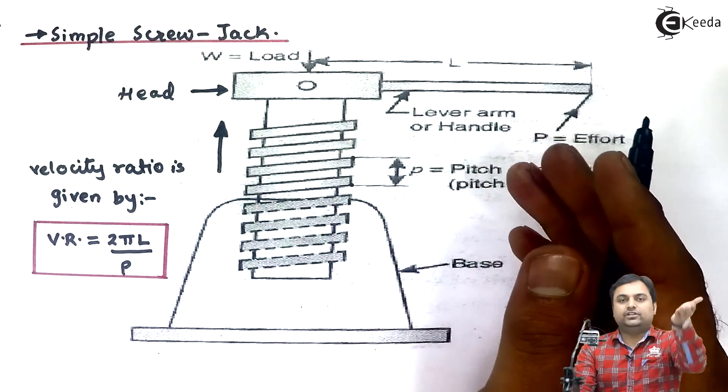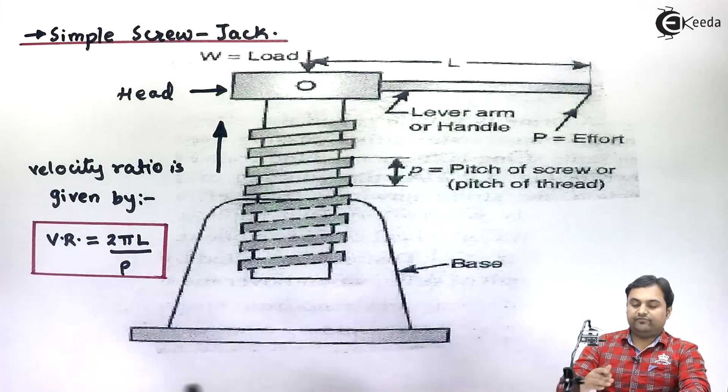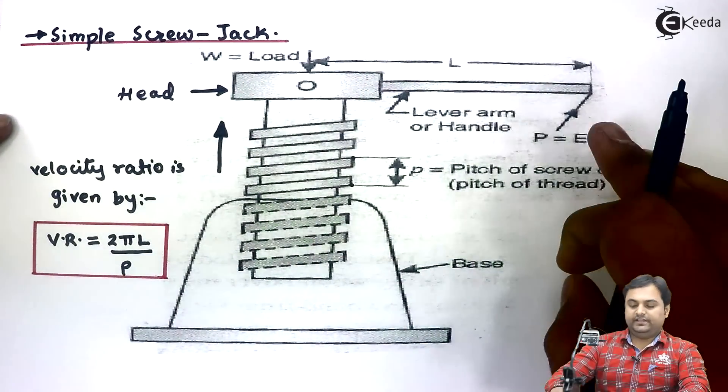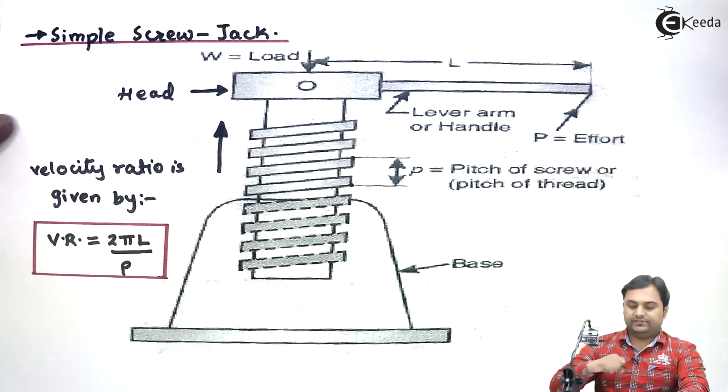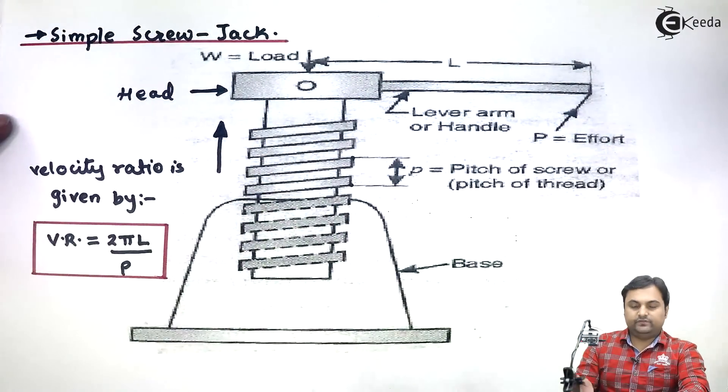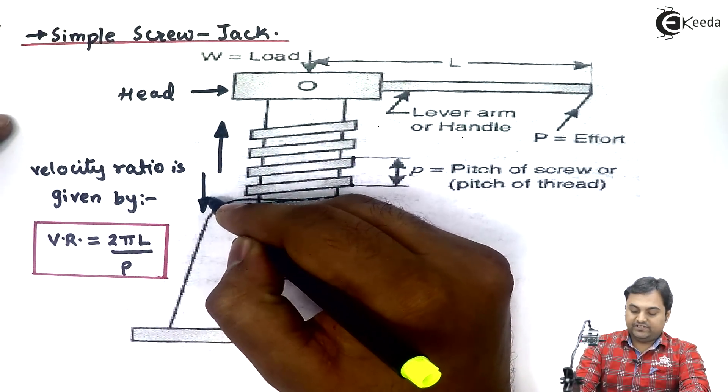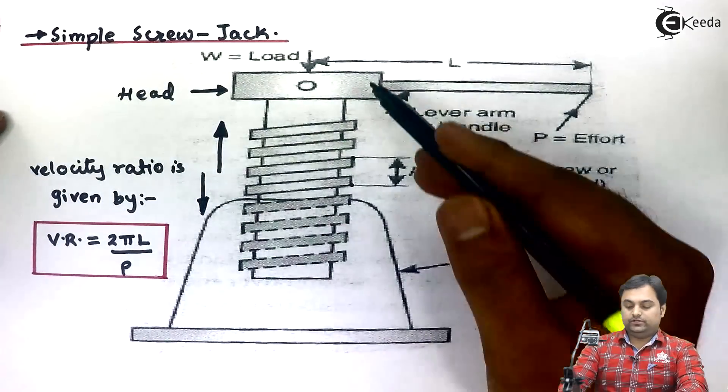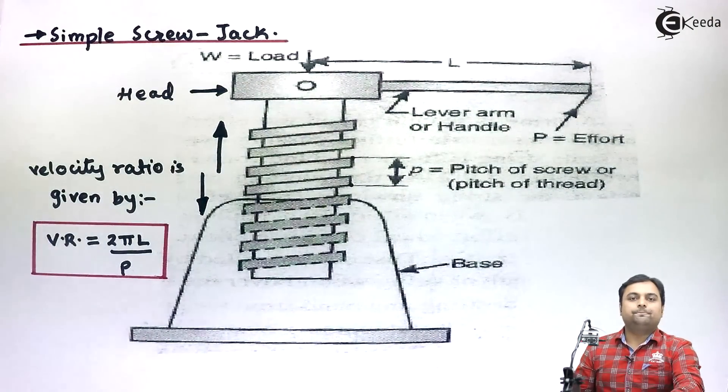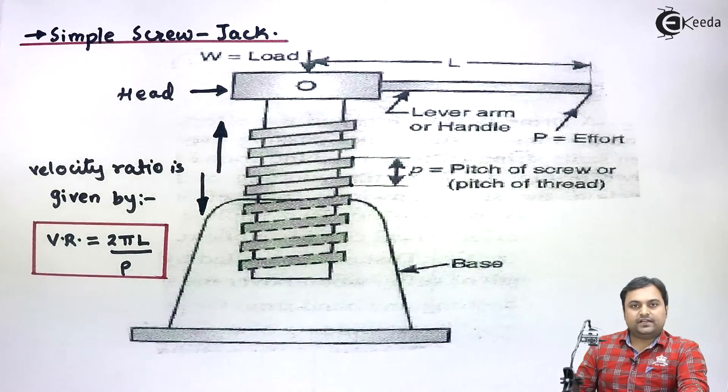Similarly, if we want to bring the load down, we would rotate this handle in the opposite direction. The screw thread when it rotates will come down, and when the screw thread moves down the load also comes down. This is the functioning of screw jack.